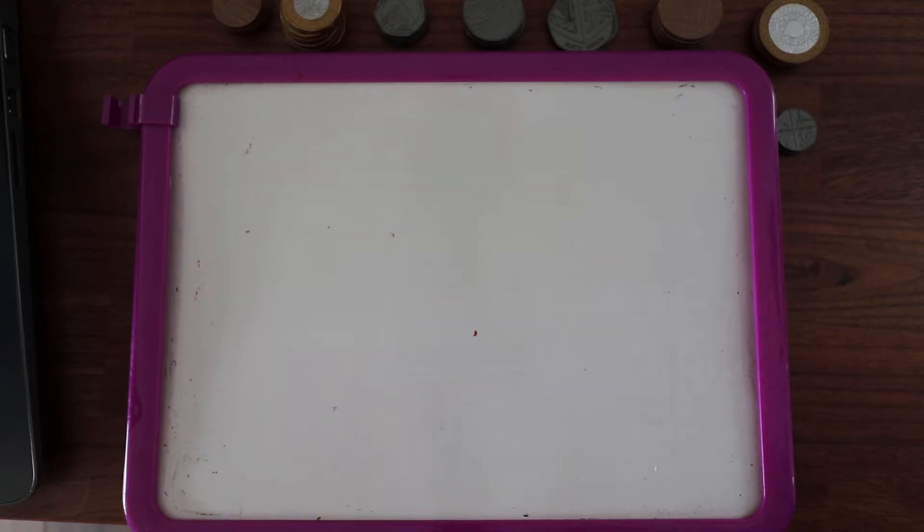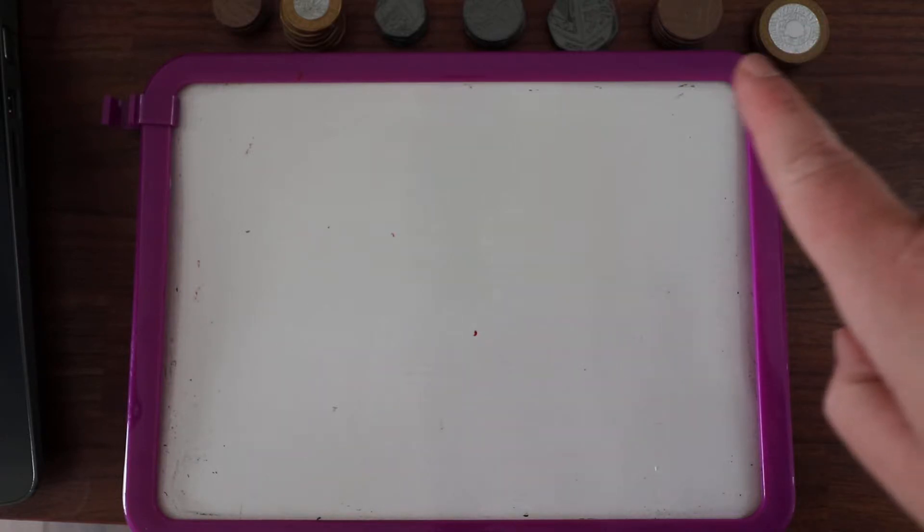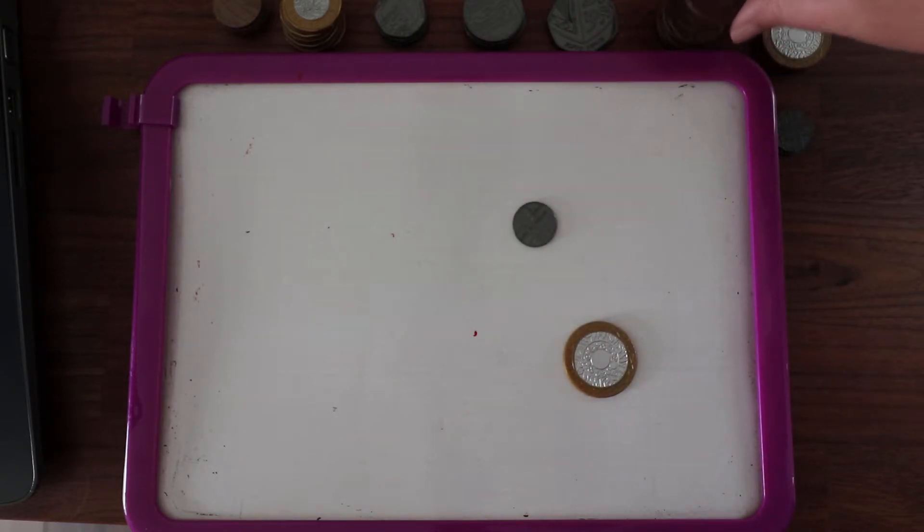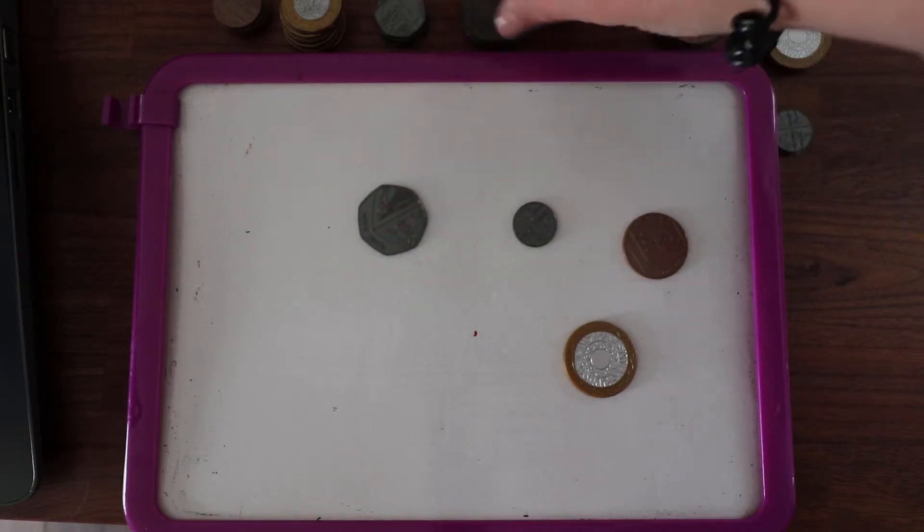Good morning everybody, it is Tuesday. I'm wondering if you can notice something on my table — what can you notice at the top here? What do you think we're going to be learning about today? Well done if you spotted the money at the top. Lots of you have been practising money at home anyway, but today we're going to be looking at the coins and what they mean. I've got one of every coin — I've got more than that, but today we're just going to look at one of every coin.